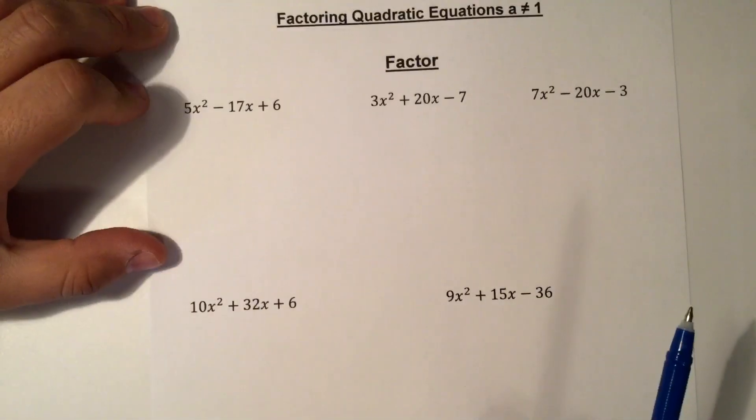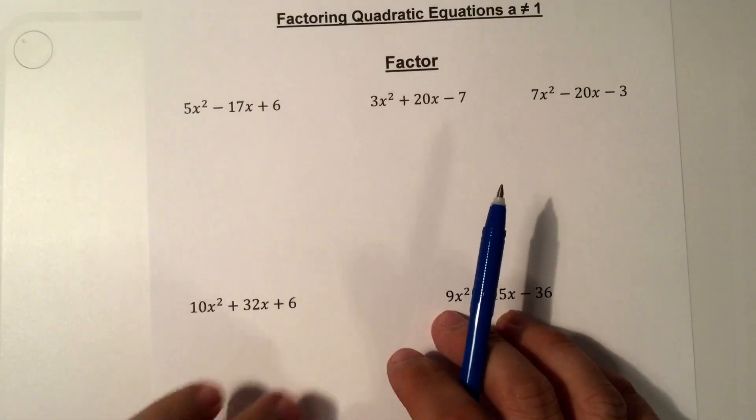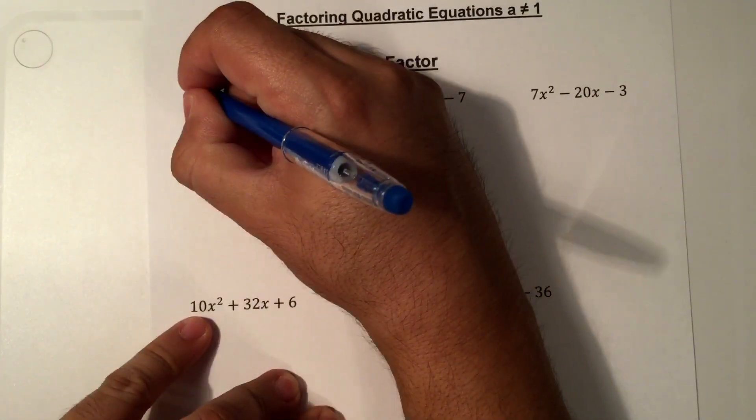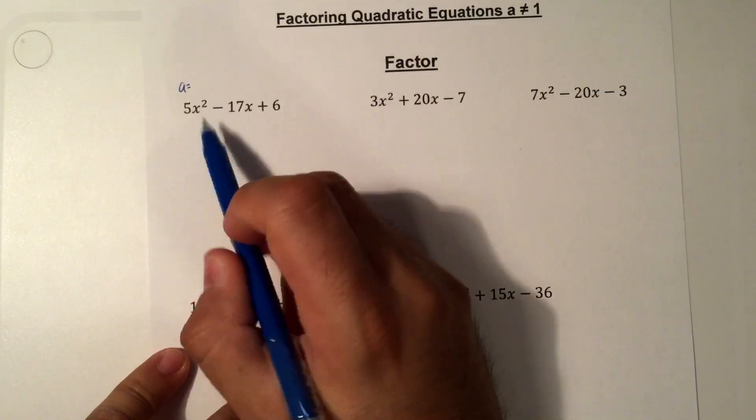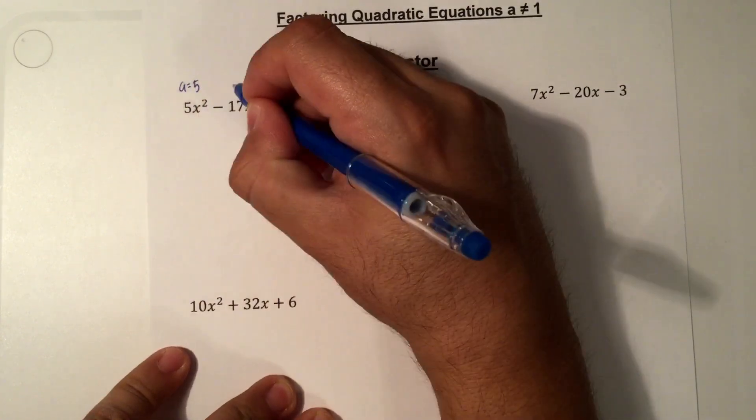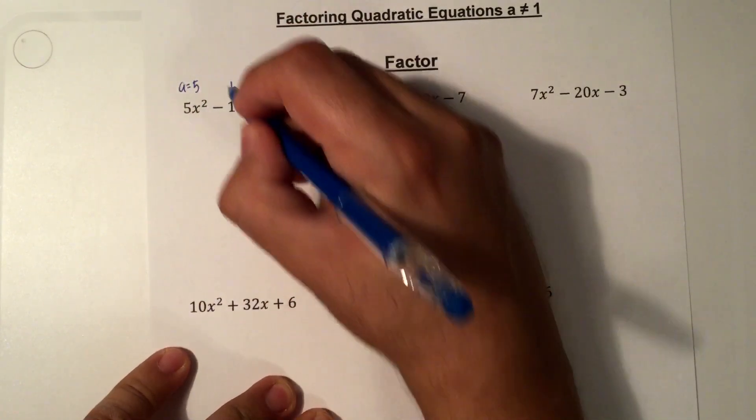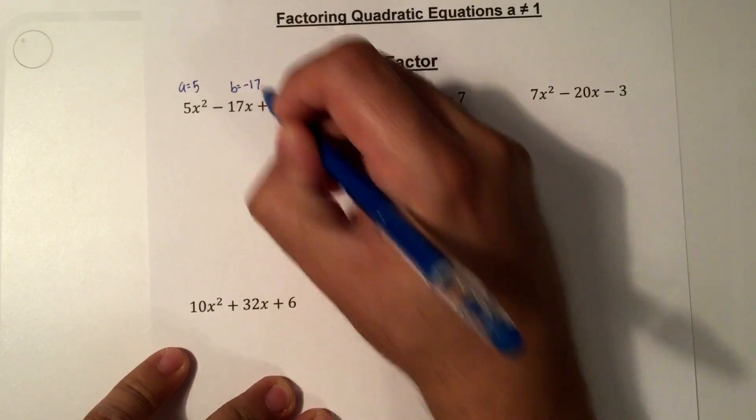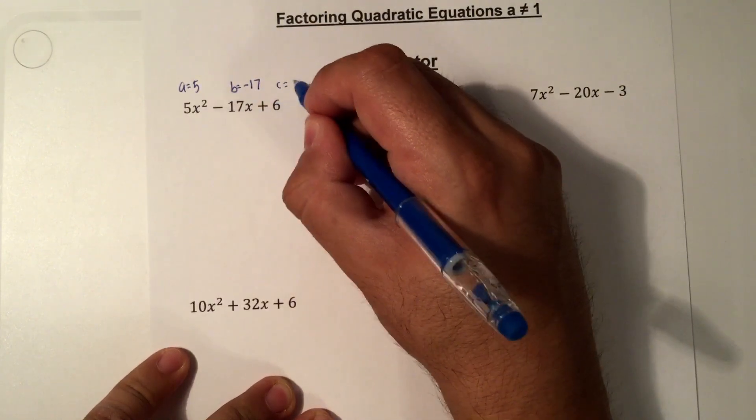For the first one, we found out that there was no GCF. So we're going to identify what a, b, and c are. a is in front of the x squared term, which in this case is 5. b is in front of x, which is negative 17. And c is the constant, which is 6.